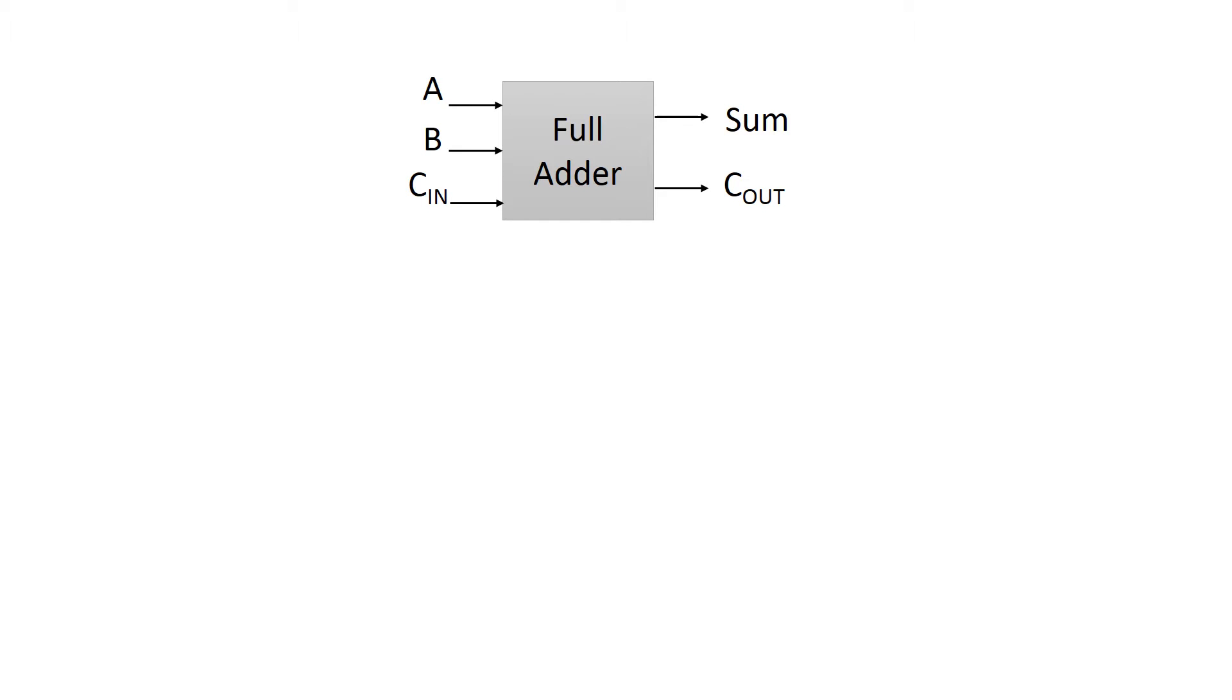Figure shows the block diagram of full adder. It has three inputs: A, B and C in, and two outputs: sum and C out.